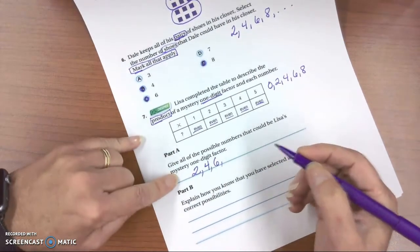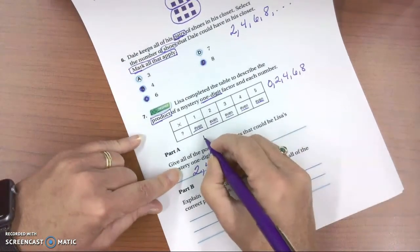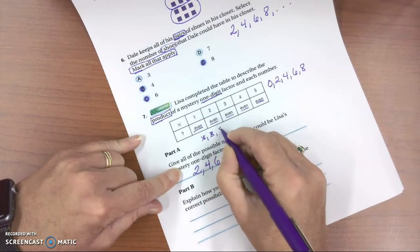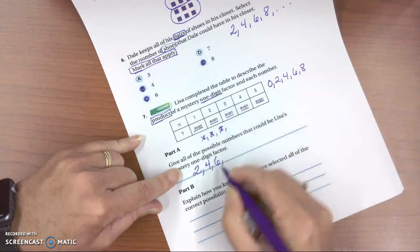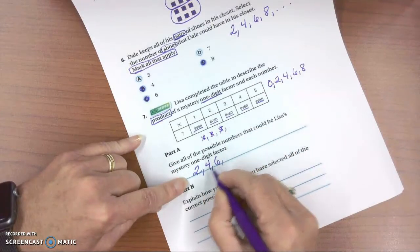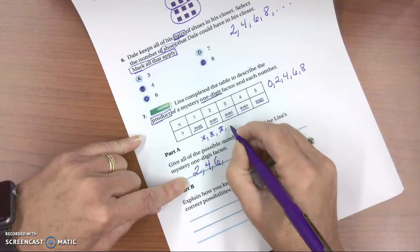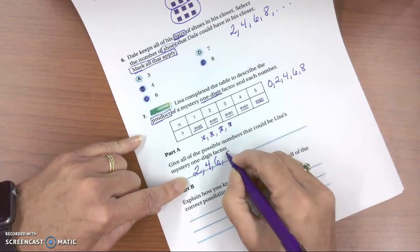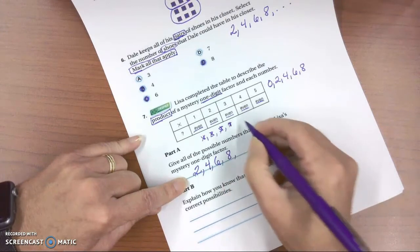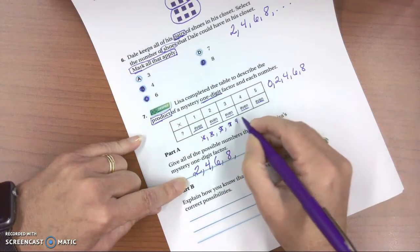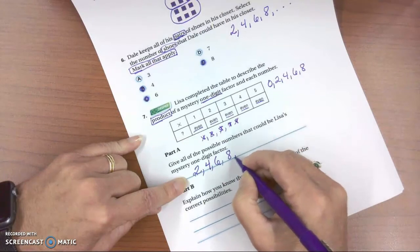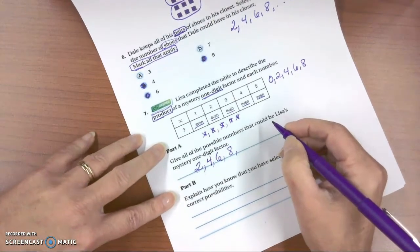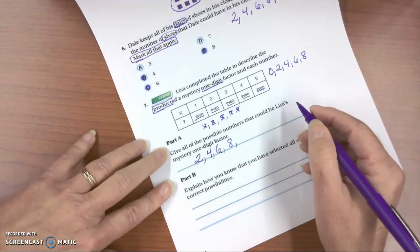Now I hope you're seeing the pattern. We tried 1, it didn't work. We tried 3, it didn't work. We tried 5, it didn't work. But we tried our even numbers, 2, 4, and 6, and they worked. So would 7 work? No. But 8 would work. Would 9 work? No. And then our next number would be 10, so we would be into 2-digit factors instead of 1-digit factors.